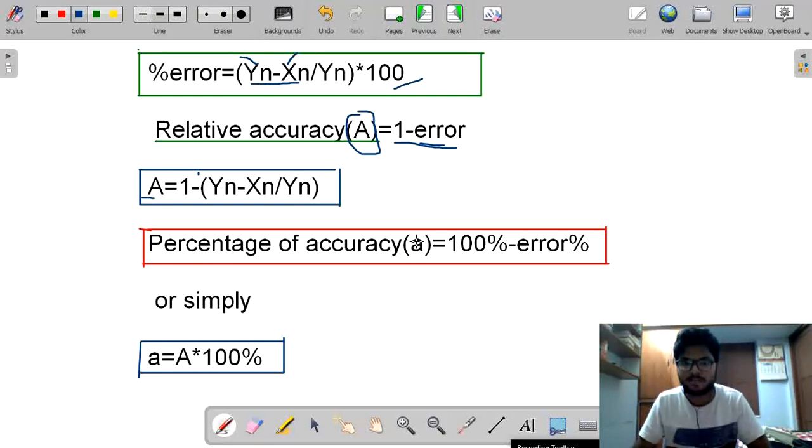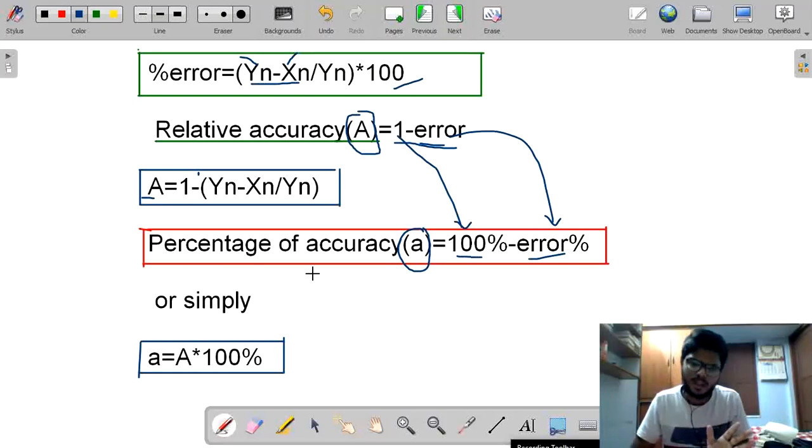Now, percentage of accuracy. See, it is denoted by the notation small a. Small a equal to 1 minus error. Here we have written in terms of normal, 1 minus error. But what we have written here, 100. See, 1 for 1, 100%. For error, it is error. So, it is represented as small a. We will write as 100 minus error. Or write simply as, 1 minus error. What is 1 minus error? We have denoted as capital A. So, write as capital A into 100. Simply write like this.